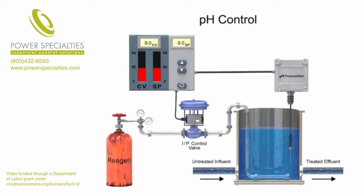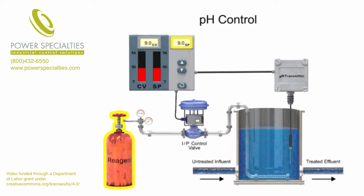An example of an automatic pH level control system is a water treatment process where lime-softened water is maintained at a pH of 9 using carbon dioxide as a reagent.